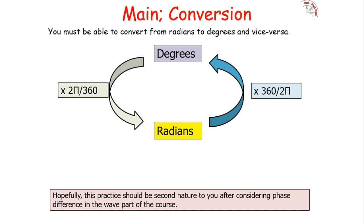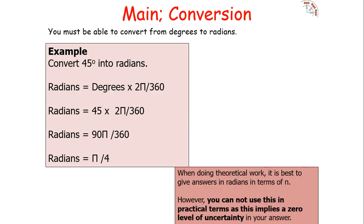This should be familiar from the phase difference section of the waves part of the course. For example, to convert 45° into radians: 45 × (2π/360) = 90π/360 = π/4. When doing theoretical work you can leave answers in terms of π, but in practical work you cannot leave answers in terms of π because π is an irrational number with an infinite number of significant figures, implying zero uncertainty, which is never the case in practical work.